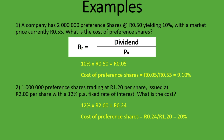The cost is 20 percent, which is very high. The reason it's high is because the share was originally issued at R2 but has now fallen to R1.20. The outlook on the company is low, meaning investors would want a higher return for investing in it — and that's why the cost is 20 percent.